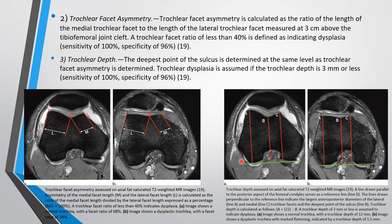Trochlear depth is measured by first drawing a reference line at the posterior aspect of the femoral condyle at 3 cm above the tibiofemoral joint cleft. Then we draw the largest anteroposterior diameter of the lateral and medial condyle, labeled A and C. Then we measure the deepest point of the sulcus, labeled B, and use the formula (A + C)/2 minus B. If the trochlear depth is 3 mm or less, it is assumed to indicate dysplasia, with sensitivity 100% and specificity 96%.